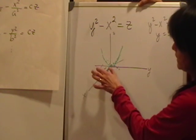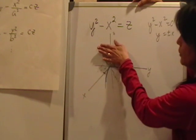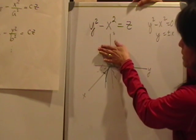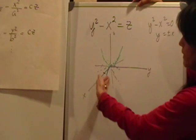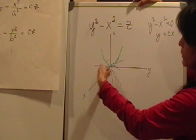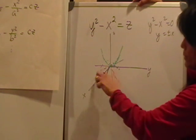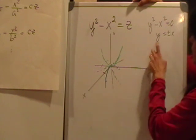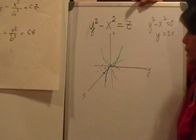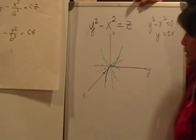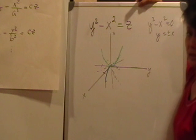So we have three sets of traces: the green yz trace is the parabola y squared equals z; the blue xz trace going sideways is the downward parabola negative x squared equals z; and on the floor we have the two lines y equals plus or minus x. But this doesn't yet give a clear picture of the graph, so we need to look at cross sections.